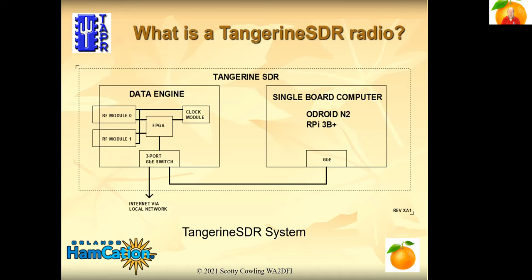Here's a block diagram. You can see where we have the two RF modules on the left, the clock module on the right, with an FPGA in the middle doing the heavy lifting. We've added a three-port gigabit ethernet switch so that you can hook it directly to the single board computer or the local host computer and to your local network all at the same time.